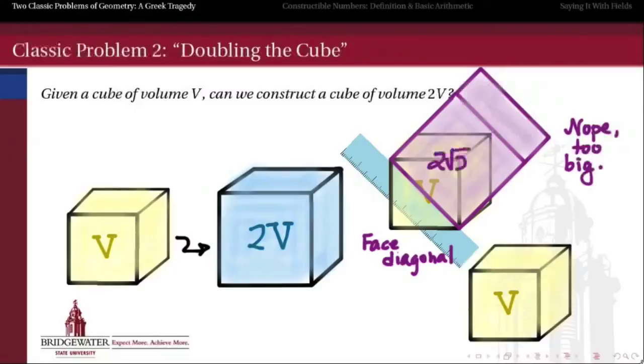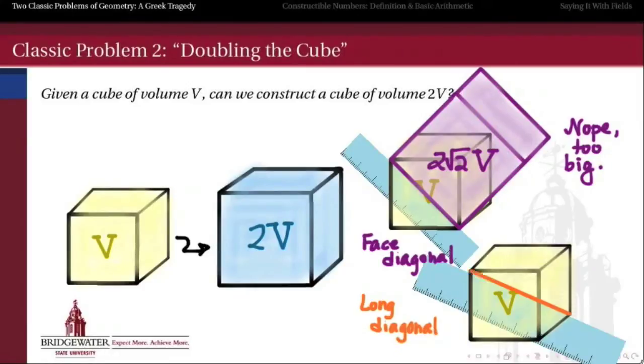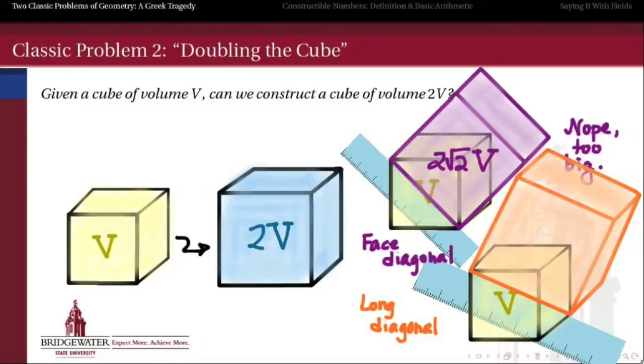But if we do that, we're going to get a cube that's too big. We're going to get not twice the volume, but twice the square root of 2 times the volume. So that doesn't quite work. We could try a different diagonal. We could try the long diagonal that goes from an opposite corner to an opposite corner on this cube. But then the problem gets even worse because then we end up with a volume that's way too big. So neither of these approaches is enough to double the cube.